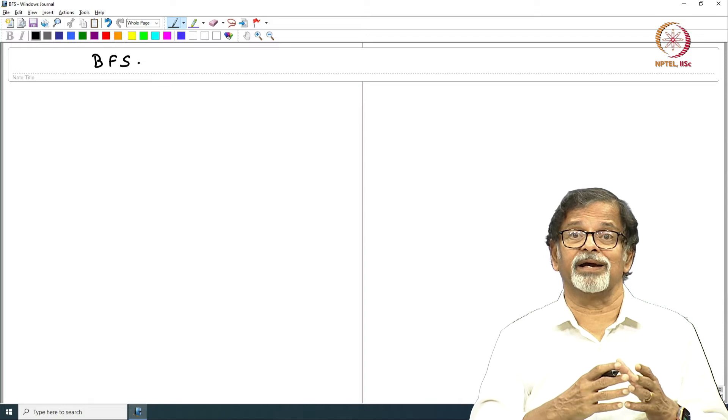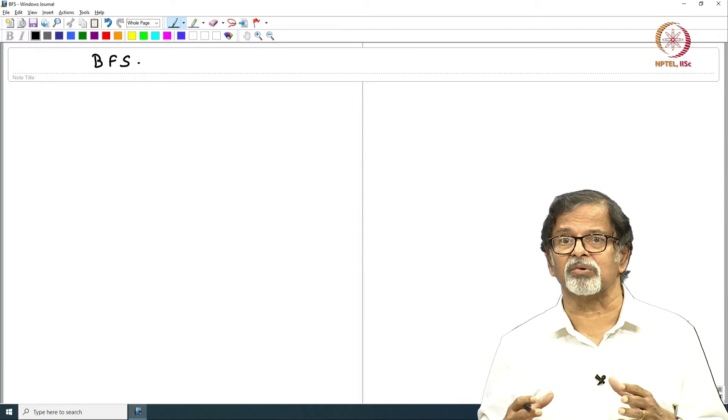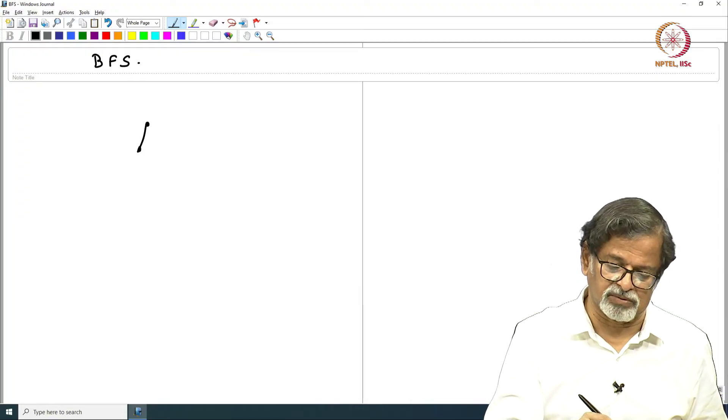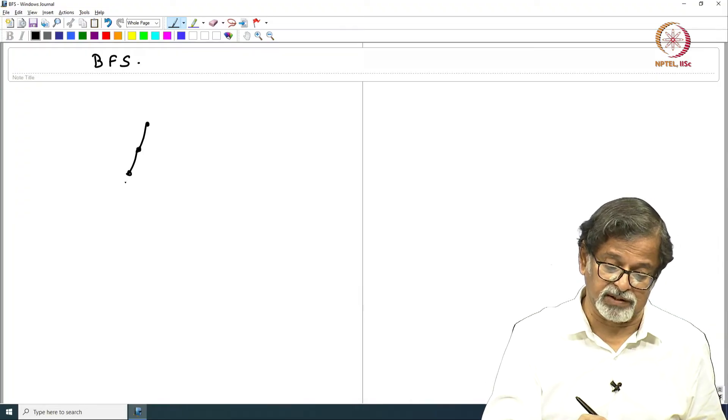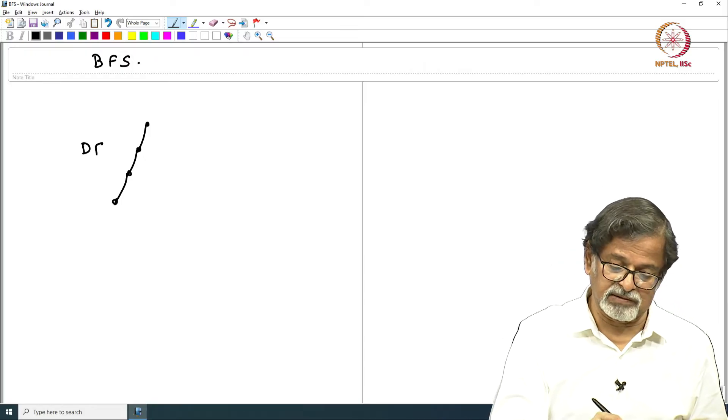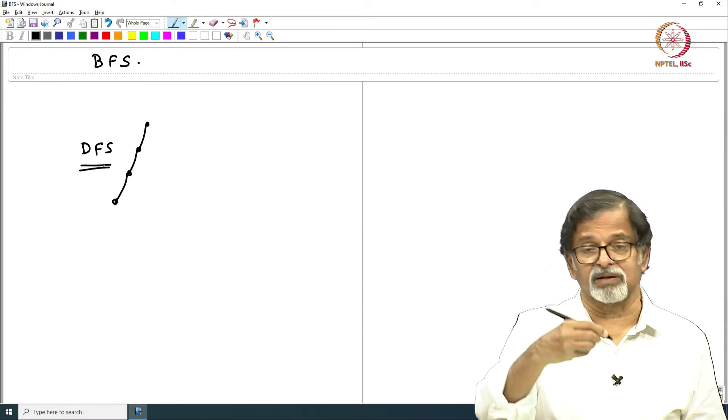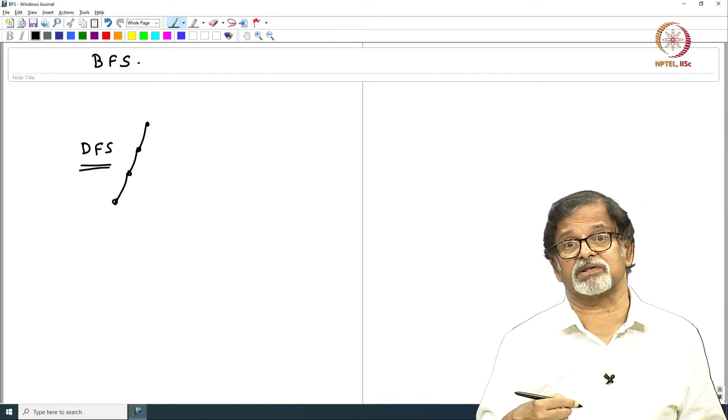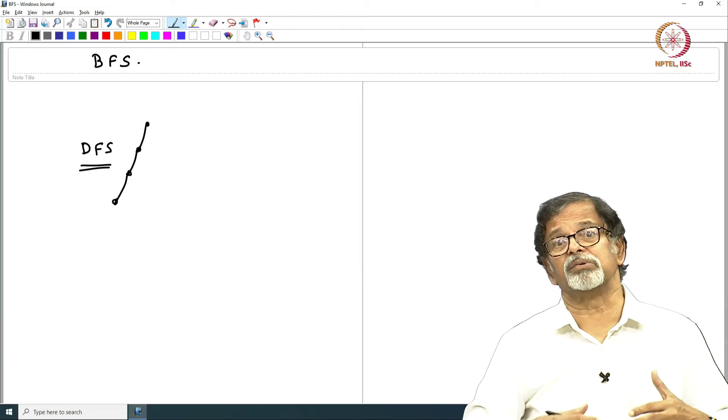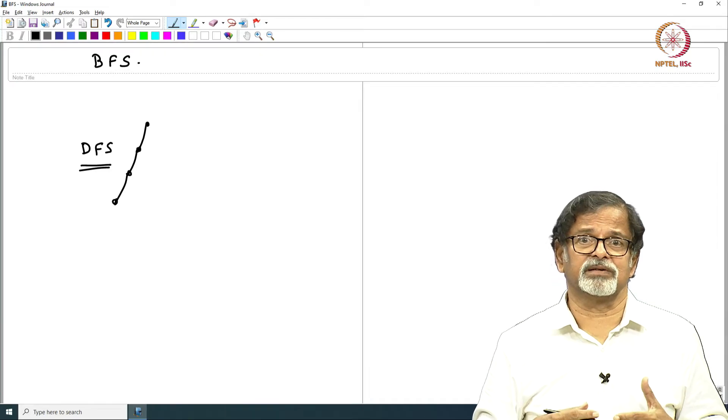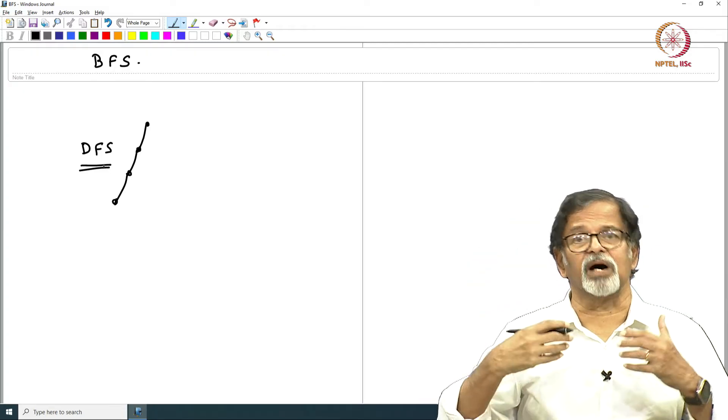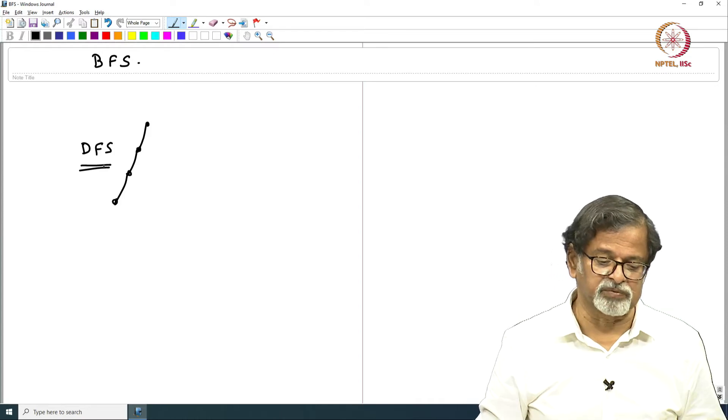So we had a chain being built and grown during the search process. You start from there, go to its neighbor, from there go to another neighbor. This is DFS, that is the reason why it is called depth-first search. You go deep, you build a chain until you cannot proceed any further. This is visualized as starting from a root and going deeper and deeper down, that is why the word depth-first search.